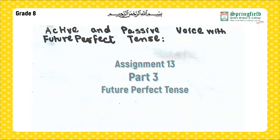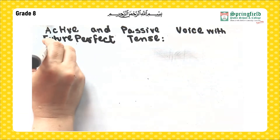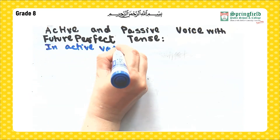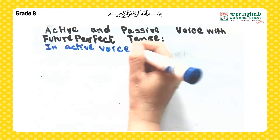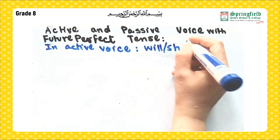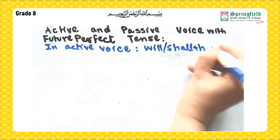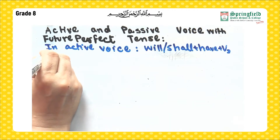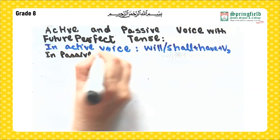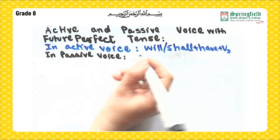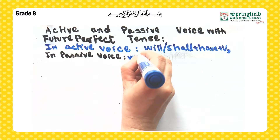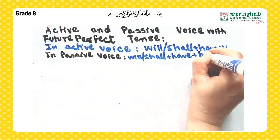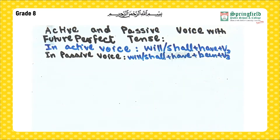Let's begin with active and passive voice with future perfect tense. In future perfect tense in active voice, we have the helping verbs will or shall plus have plus verb third form. When we change it to passive voice, it becomes will or shall plus have plus been plus verb third form.